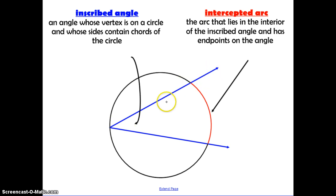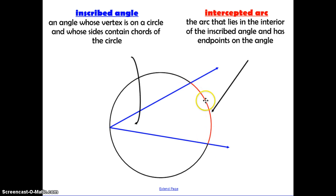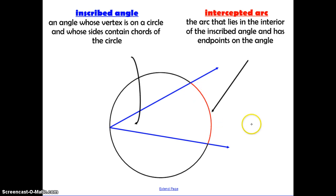Just like we talked about last time, the edge of the circle that the sides of the angle cut off is called the intercepted arc. That's the arc that lies in the interior of the inscribed angle and has endpoints on the angle.